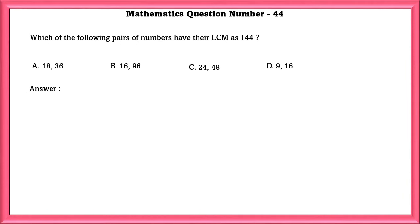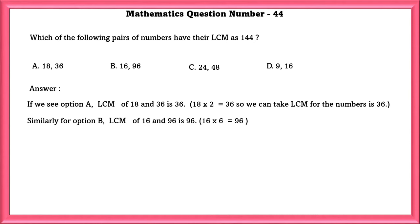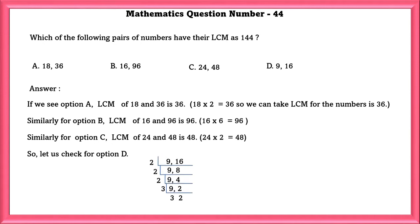Mathematics question number 44. Which of the following pairs of numbers have their LCM as 144? If we see in option A, LCM of 18 and 36 is 36. So we can take the LCM for the numbers as 36. Similarly for option B, LCM of 16 and 96 is 96. Similarly for option C, 24 and 48 LCM is 48. The only one left out is D. So let us check it. If we check, we will get the LCM as 144.